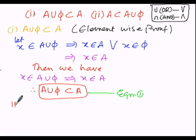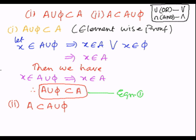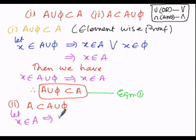For the second case, in a reverse manner, A must be a subset of A union φ. Since we are proving by element-wise proof, let X be an element which belongs to A. Then since X is present in A, it can be written further.